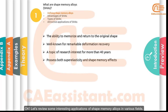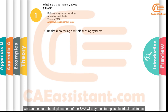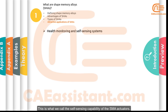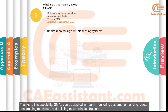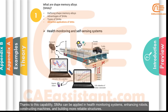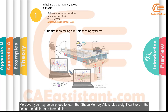Let's review some interesting applications of shape memory alloys in various fields. We can measure the displacement of an SMA wire by monitoring its electrical resistance, eliminating the necessity for additional sensors. This is called the self-sensing capability of SMA actuators. Thanks to this capability, SMAs can be applied in health monitoring systems, enhancing robots, constructing machines, and building more reliable structures.